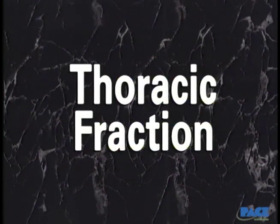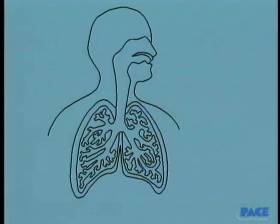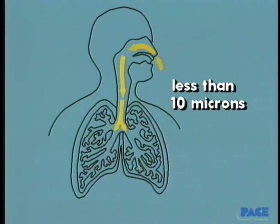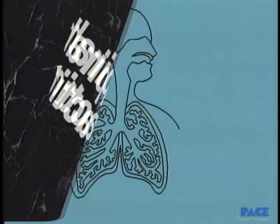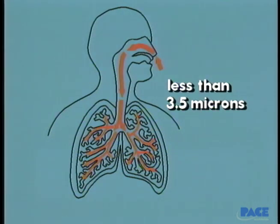The thoracic fraction includes particles less than 10 microns but greater than 3.5 microns in diameter. Coal dust and cement dust are examples of thoracic-sized particulates. The respirable fraction includes particles less than 3.5 microns in diameter. These particles are capable of being deposited in the gas-exchange region of the lungs. Flux fumes are included in this category.